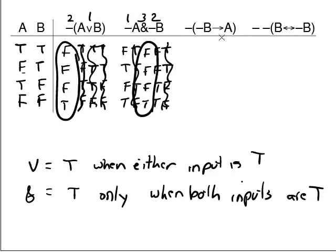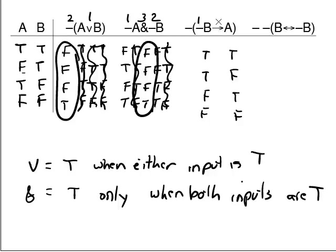Next formula: dash-(dash-B arrow A). Underneath B, write true, true, false, false. Underneath A, write true, false, true, false. The outer dash is the main connective, so it's last. Inside the parentheses, the arrow is the main connective, so this inner dash comes first, then the arrow, then the outer dash. Working on the inner dash gives us false, false, true, true.